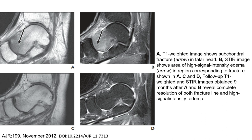In summary, for fractures on MRI, T1-weighted imaging is useful to visualize the fracture line, and STIR imaging is useful to visualize the high signal intensity bone marrow edema.